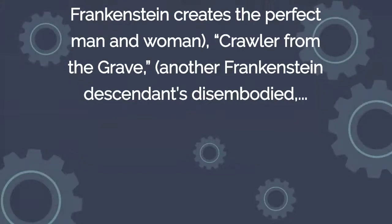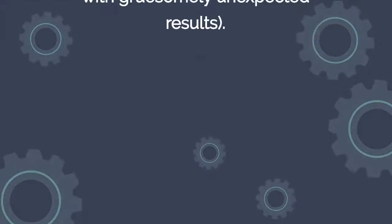My Creation, My Beloved: A deformed descendant of Victor Frankenstein creates the perfect man and woman. Crawler from the Grave: another Frankenstein descendant. Karnstein's Creation: A mad doctor creates a monster in vampire-haunted Transylvania.